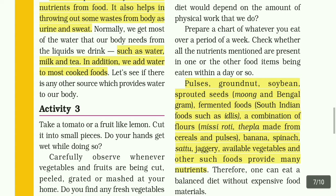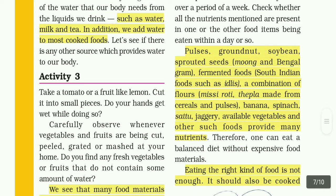Pulses, groundnut, soya bean, sprouted seeds, moong and Bengal gram, fermented food, South Indian food such as idlis, a combination of flours, missi roti, thepla made from cereals and pulses, banana, spinach, sattu, jaggery, and available vegetables and other such foods provide many nutrients. Therefore, one can eat a balanced diet without expensive food materials.